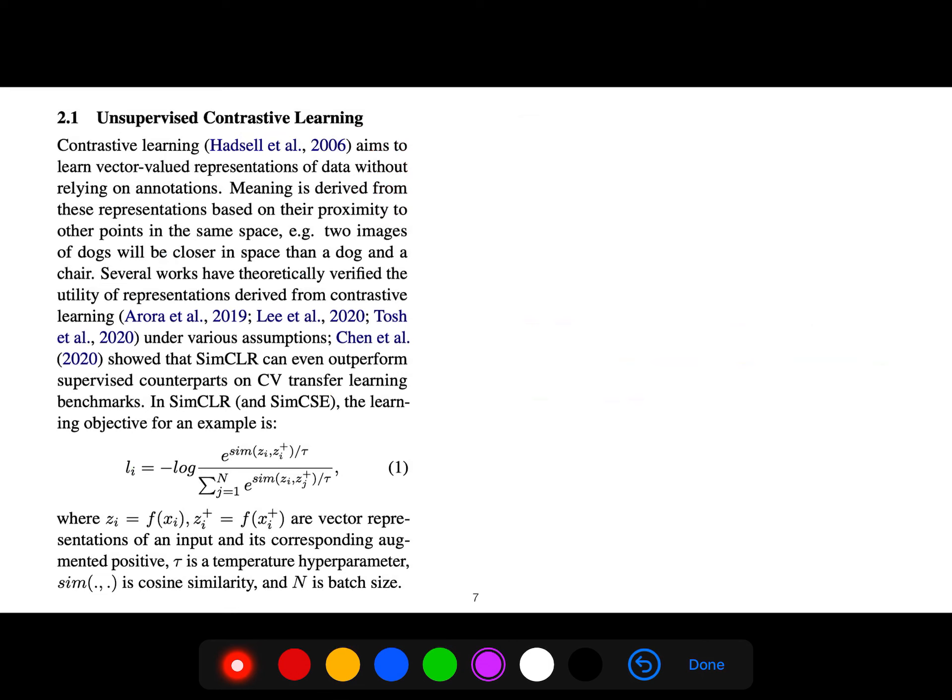Contrastive learning aims to learn vector-valued representations of data without relying on annotations. Meaning is derived from those representations based on proximity to other points in the same space. For example, two images of dogs will be closer in space than a dog and a chair. Several works have theoretically verified the utility of representations derived from contrastive learning and showed that SimCLR can even outperform supervised counterparts on CV transfer learning benchmarks.